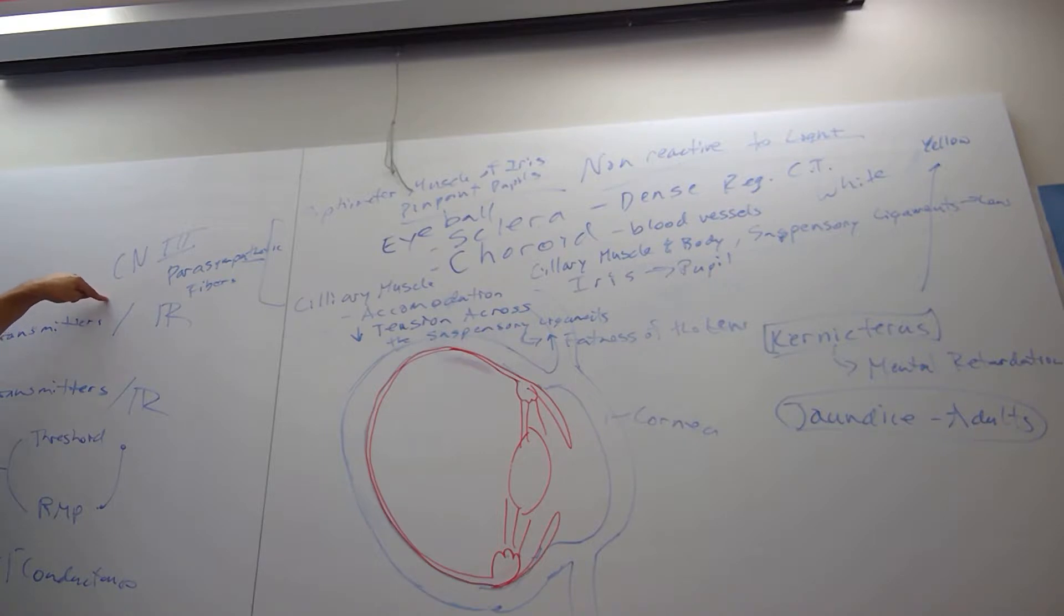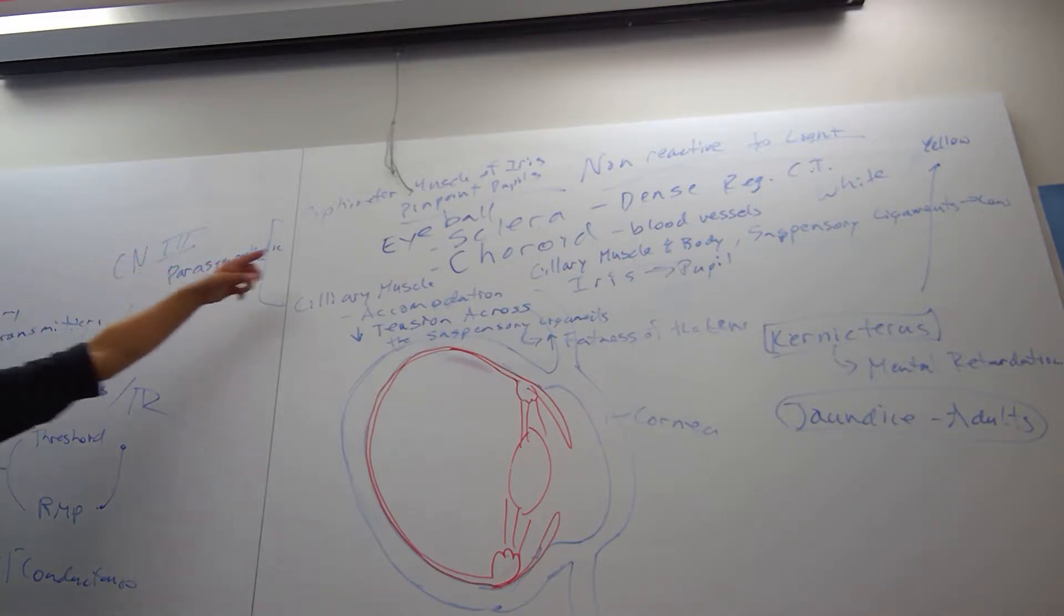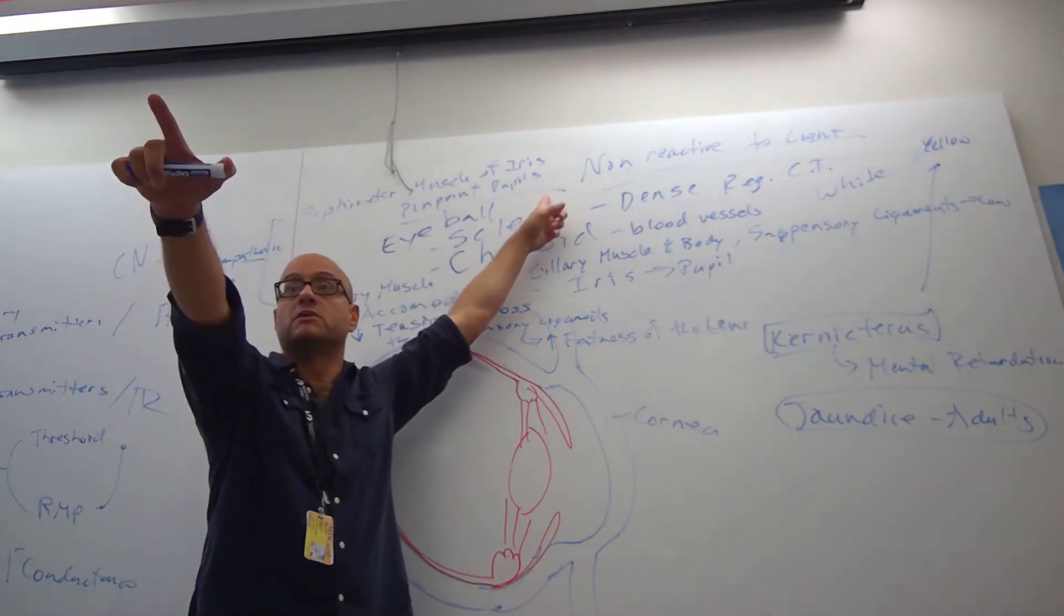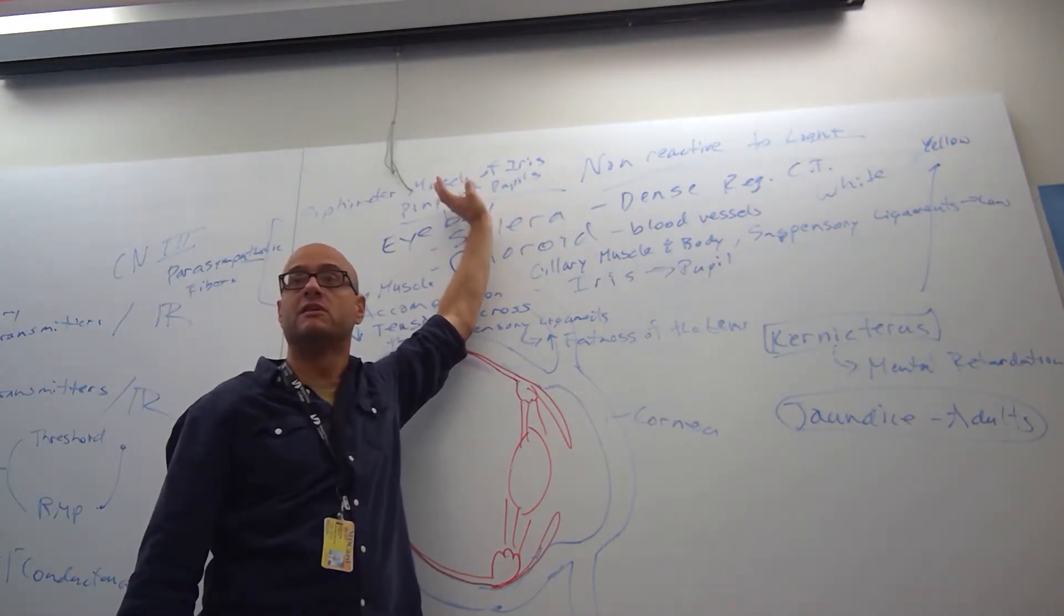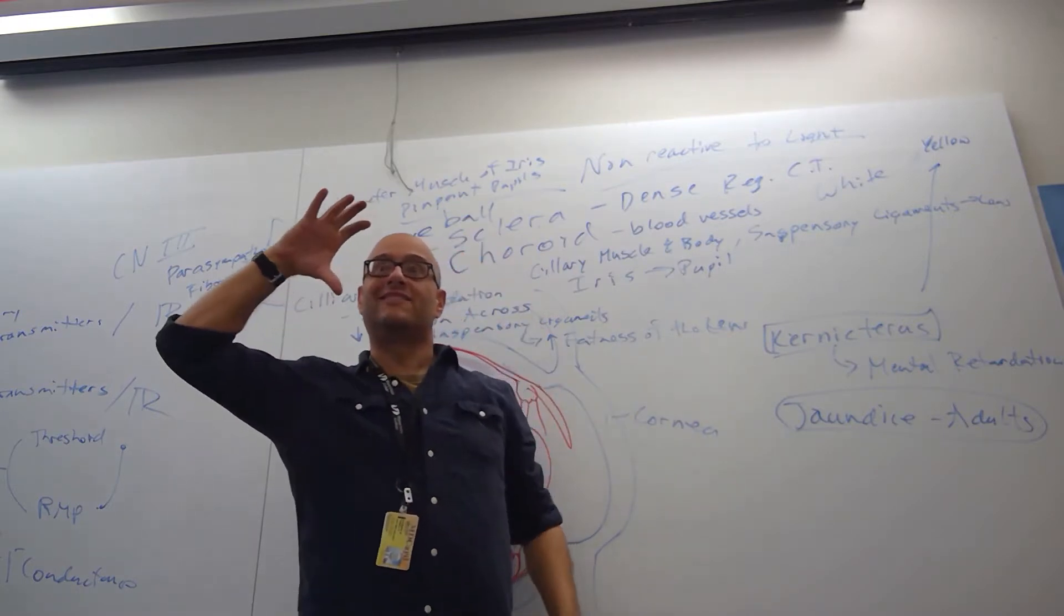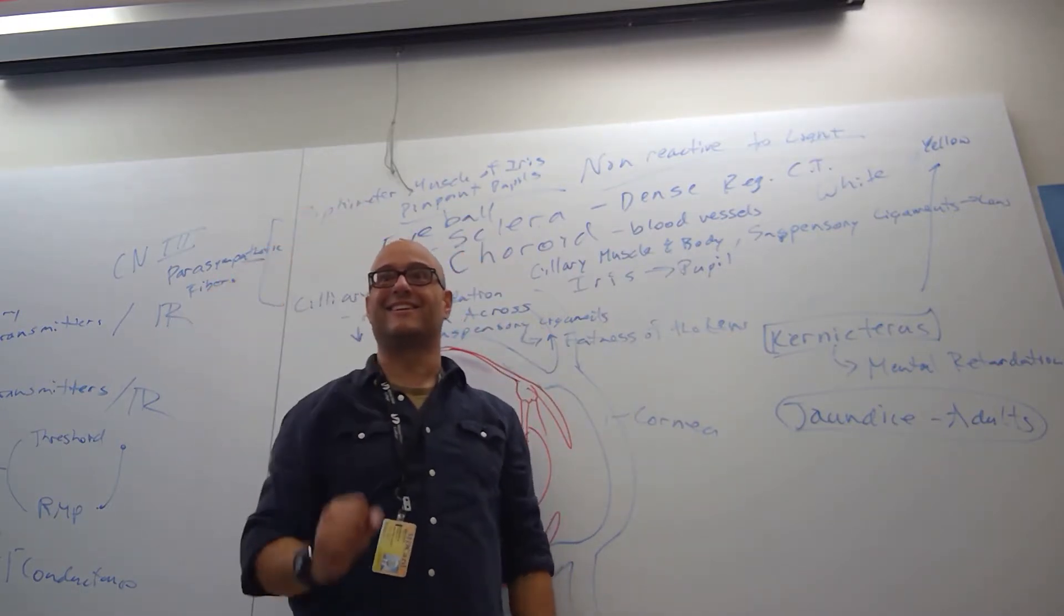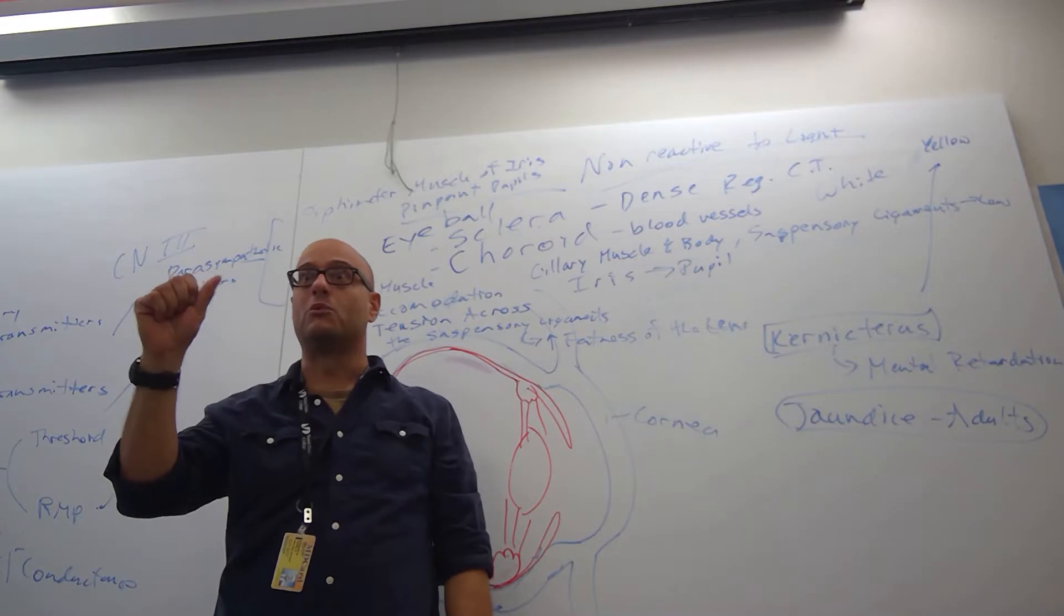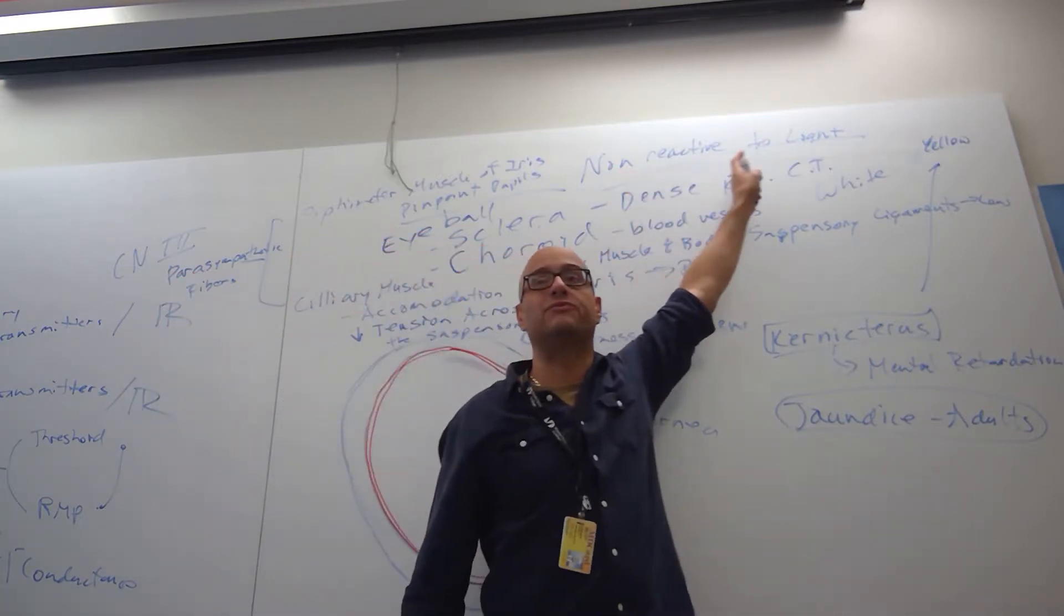So when a patient comes in with pinpoint pupils, non-reactive to light, you push that reversal drug. You assume that they took some kind of morphine. You don't even ask, and you push the drug. And you'll see the pinpoint pupils, they'll reverse. And when you shine the light in their eye, it'll dilate and then constrict again. That's normal. Your eyes should be reactive to light.